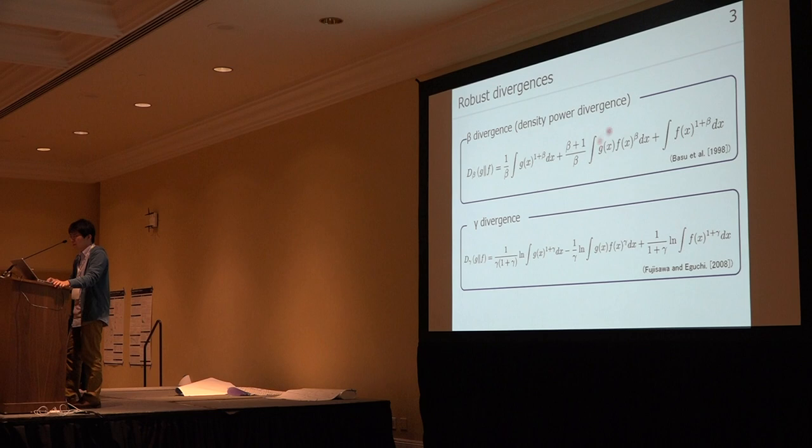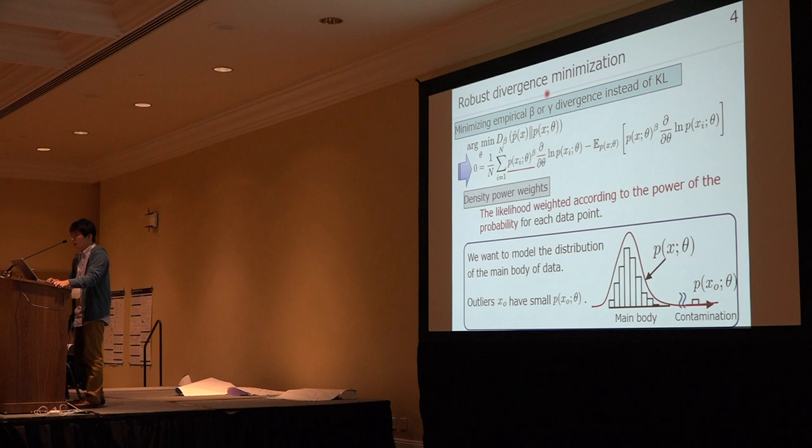Maximum likelihood estimation is sensitive to outliers because it treats all data points equally. To avoid such problems, robust divergence was developed. One is called beta divergence, or density power divergence, developed about 20 years ago. Another is called gamma divergence. Based on these divergences, in the robust divergence minimization framework, we measure the generalization error using beta or gamma divergence rather than KL divergence.